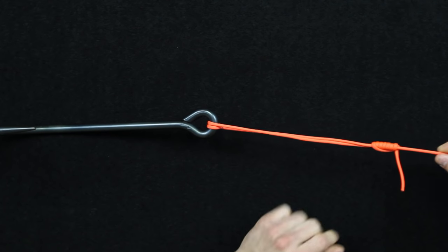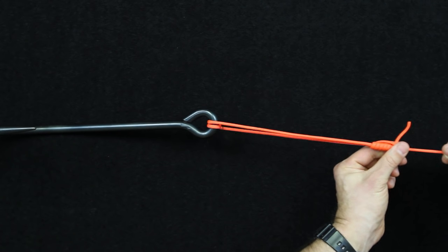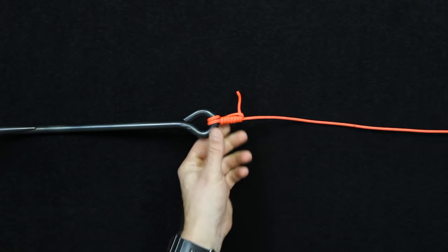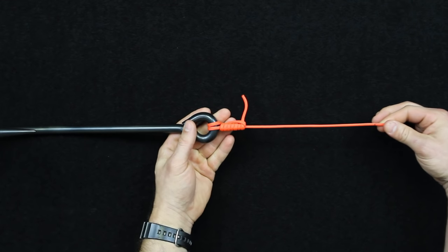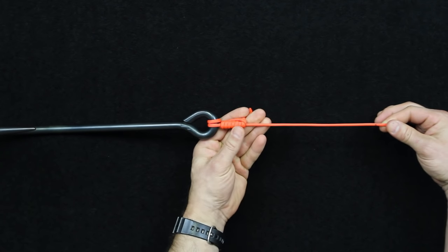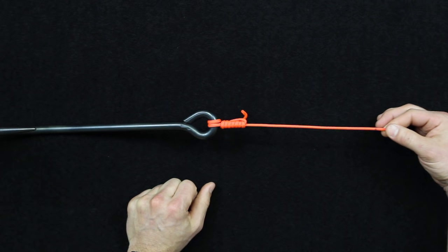Once you've got that tightened up, then you're just going to grab the knot itself and push it back down to the eye of the hook. So again, that's the Uni knot, one of the more simpler knots to tie fishing-wise in the dark.